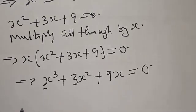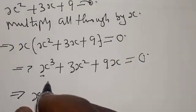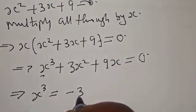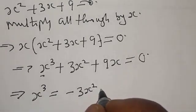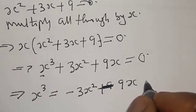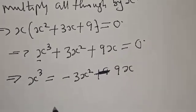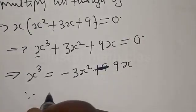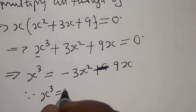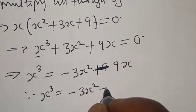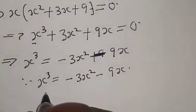We are looking for s raised to power 3, so let's make s cubed the subject of the formula. This implies s cubed is equal to minus 3s squared minus 9s.